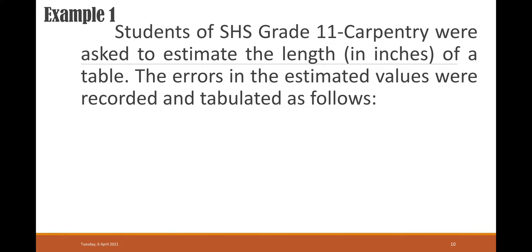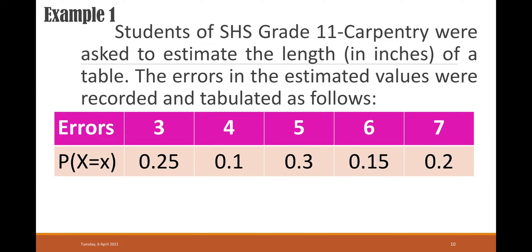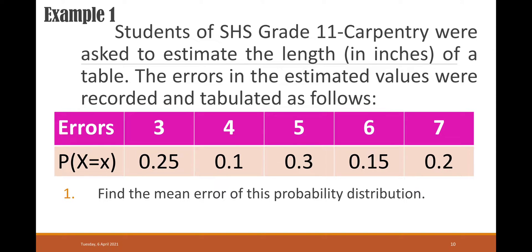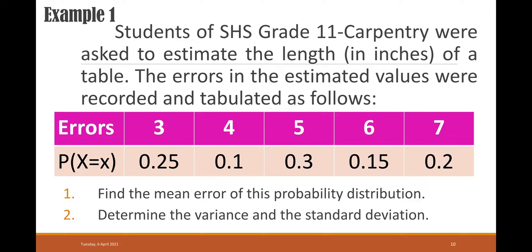For example: Students of Senior High School Grade 11 Carpentry were asked to estimate the length in inches of a table. The errors in the estimated values were recorded and tabulated. We have errors of 3, 4, 5, 6, and 7 inches, with probabilities of 0.25, 0.1, 0.3, 0.15, and 0.2 respectively. We will find the mean error of this probability distribution and determine the variance and the standard deviation.